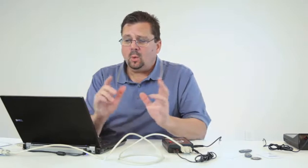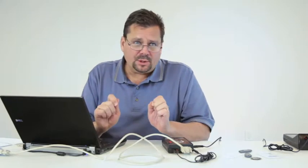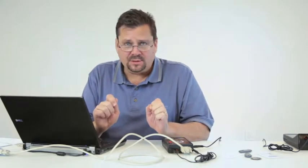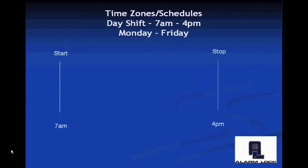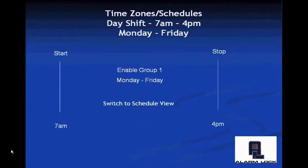The concept is this: we're going to create a time zone or a schedule for day shift, 7 a.m. to 4 p.m. Monday through Friday — that's going to be the title. The second thing is we have to create the start time in the software. The start time is going to be at 7 a.m., the stop time at 4 p.m., and then we're going to enable group one Monday through Friday. Once we set that up, the next step is to switch to schedule view.